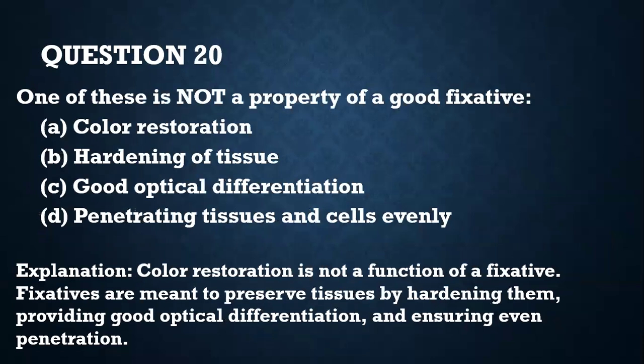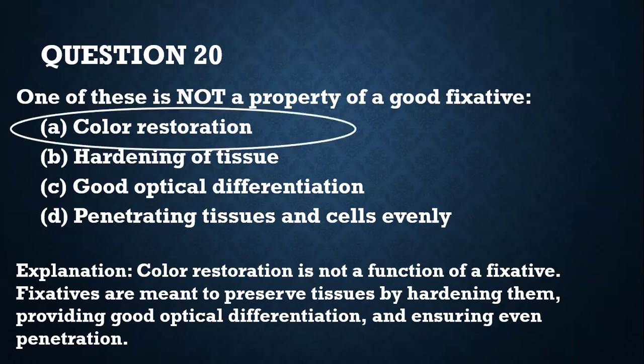Question 20. One of these is not a property of a good fixative: A — color restoration; B — hardening of tissue; C — good optical differentiation; D — penetrating tissues and cells evenly. The answer is A — color restoration — because fixatives are meant to preserve tissues by hardening them, provide good optical differentiation so you can differentiate structures, and ensure even penetration.